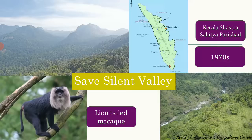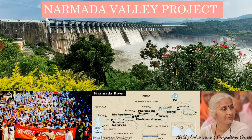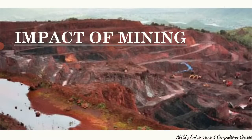These are two case studies — the Save Silent Valley project and the Narmada Valley project — which show the impact a dam can have on biodiversity, the environment, and tribal people. The second major developmental project we will look at is the mining project, whose impact is also quite detrimental to the environment.